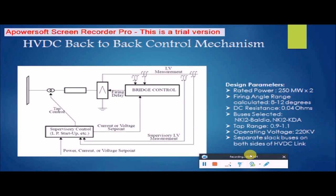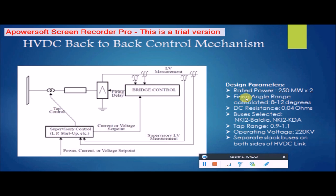Now we look at the incorporation of the HVDC back-to-back link in our project. The basic control mechanism has two types of controls. The first is firing angle control, where we control the amount of current flowing through the converter station by means of the firing angle delay — and by controlling the current, we effectively control the power flowing between the two utilities. The second is tap control, incorporated behind the rectifier and after the inverter. Together, the firing angle and tap control fix the maximum power at the specified limit.